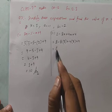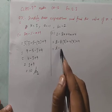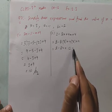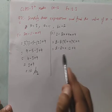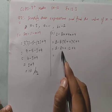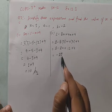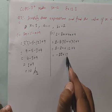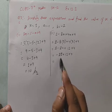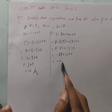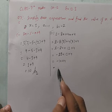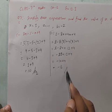Simplify: 2 minus 24 = minus 22, plus 12 = minus 10, plus 4 = minus 6. So minus 6 is the answer.